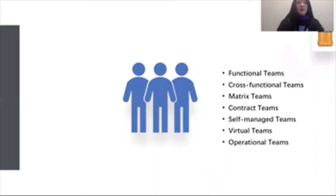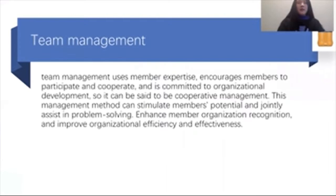First we will talk about the team. They have seven kinds of teams and the seven is very important things in the team. I think the very important is the operational teams, because we need the operational teams to sell our new products.